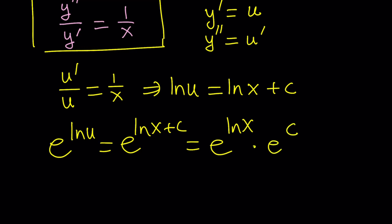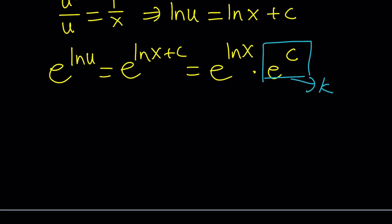c is a constant. e to the c is a constant. So, let's go ahead and call this k, another constant. And here we get the following.